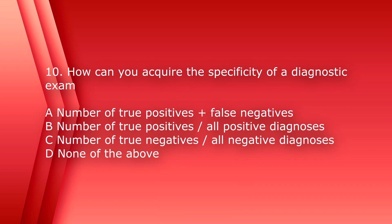Number 10. How can you acquire the specificity of a diagnostic exam? A, number of true positives plus false negatives. B, number of true positives divided by all positive diagnoses. C, number of true negatives divided by all negative diagnoses. Or D, none of the above. The answer is C, the number of true negatives divided by all negative diagnoses.